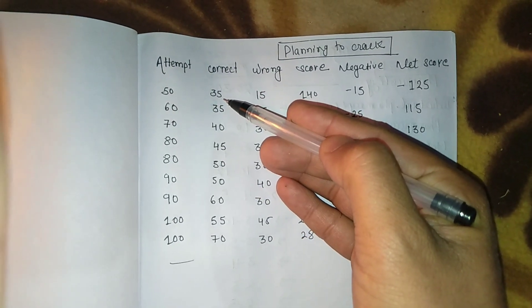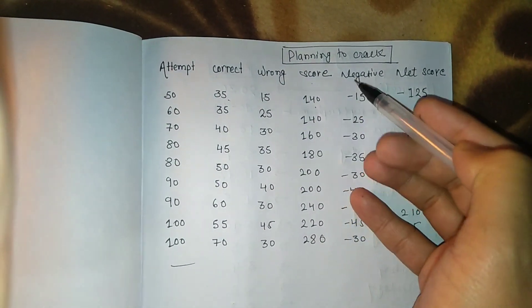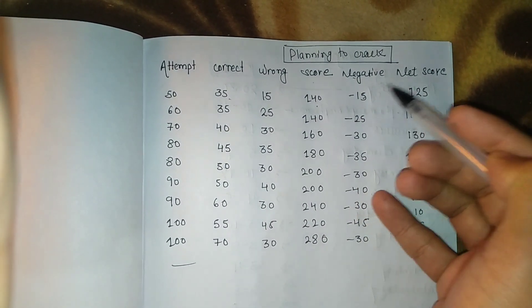If you attempt 50, 35 correct and 15 wrong, then your score is 140. With 15 negative marking, your net score is 125.